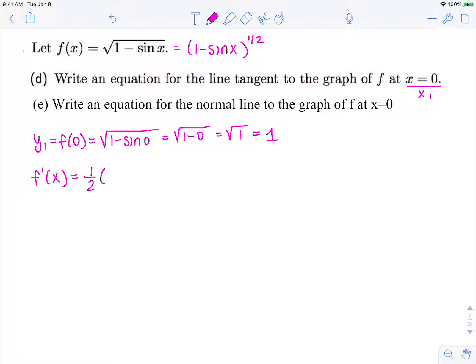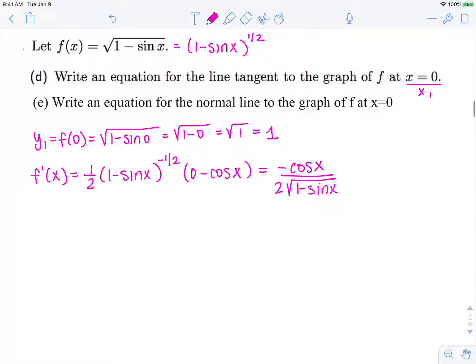So f prime of x, we're going to need some power rule with chain rule: 1 half times 1 minus sine x to the negative 1 half times the derivative of what's on the inside, 0 minus cosine x. So simplifying that, that is negative cosine x over 2 square root 1 minus sine x.